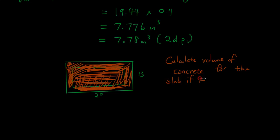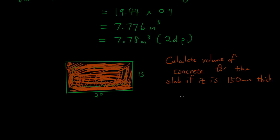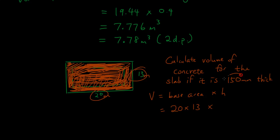The thickness of the slab is 150 millimeters, which converts to 0.15 meters. Volume equals base area times height: base area is 20 × 13, and height is 0.15 meters. Putting that into the calculator gives a volume of 39 meters cubed.